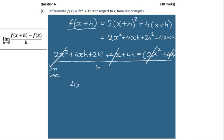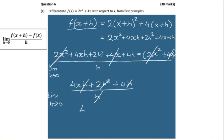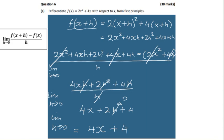The next line simplifies to 4xh + 2h² + 4h, all over h, as the limit of h goes to 0. We're nearly there — just divide by h and we get 4x + 2h + 4, as the limit of h goes to 0. So that h goes to 0 and our result is equal to 4x + 4. And that's it.